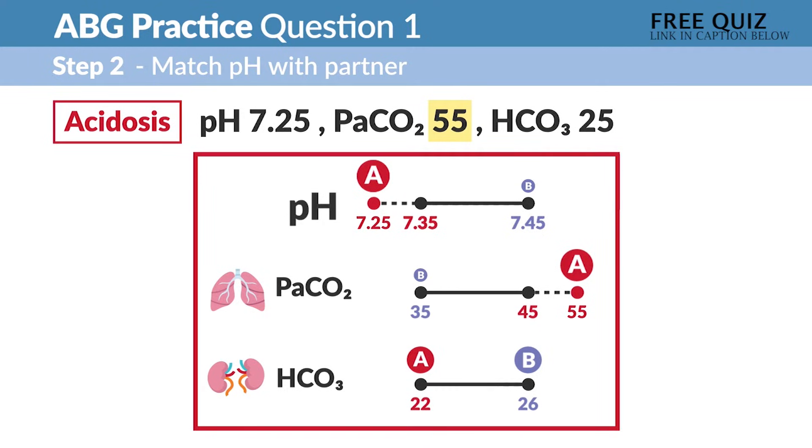Because our little lung picture hints that it's respiratory acidosis. Now, HCO3 is 25, so that's in normal range.